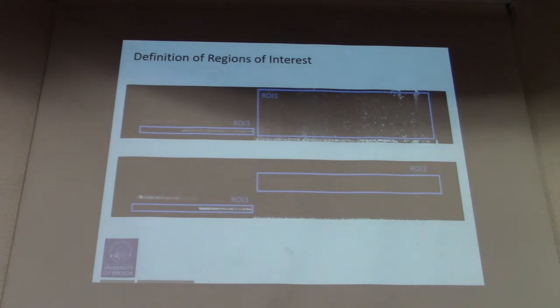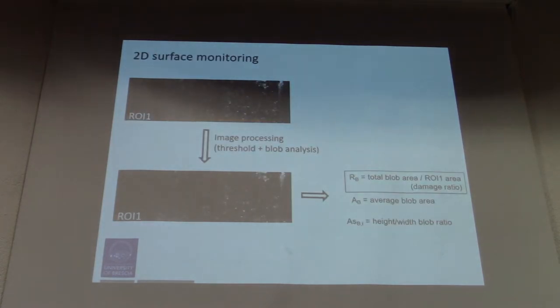This image undergoes some image processing. We define the region of interest. For our discussion today, we consider the elaboration of region of interest 1, which undergoes thresholding useful to separate bright particles from dark particles. After thresholding, we consider only the bright particles.